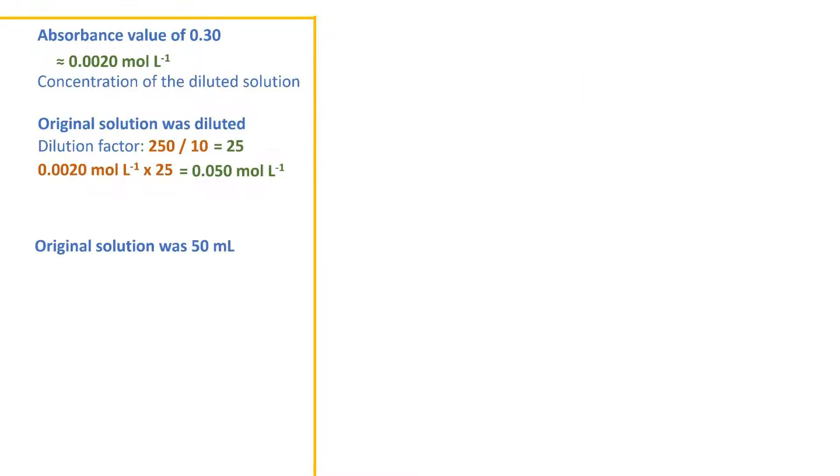We next use the volume of the original solution, 50 milliliters, but convert it to liters without showing the working. Here, we can see that in a bit more detail. We know that 1,000 milliliters is 1 liter, which means 1 milliliter is 1 one-thousandth of a liter. Therefore, 50 milliliters to liters is just 50 divided by 1,000, which gives us 0.05 liters.